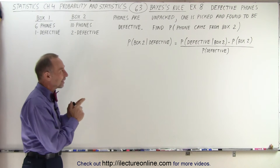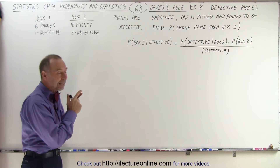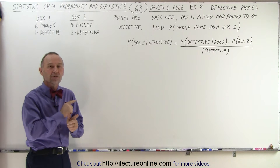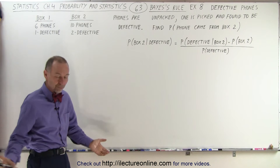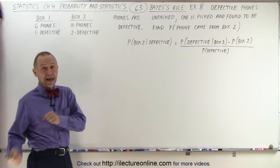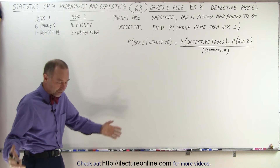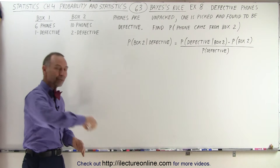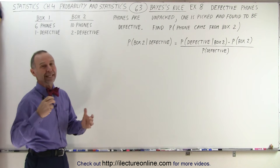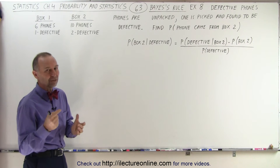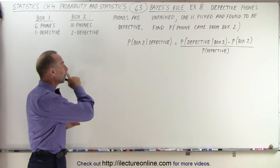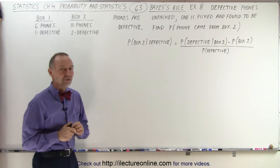Now we're trying to find the probability that the phone came from box two. So we unpack both of the boxes, put all the phones in a pile, grab one — it is defective. What's the probability that one came from box two?